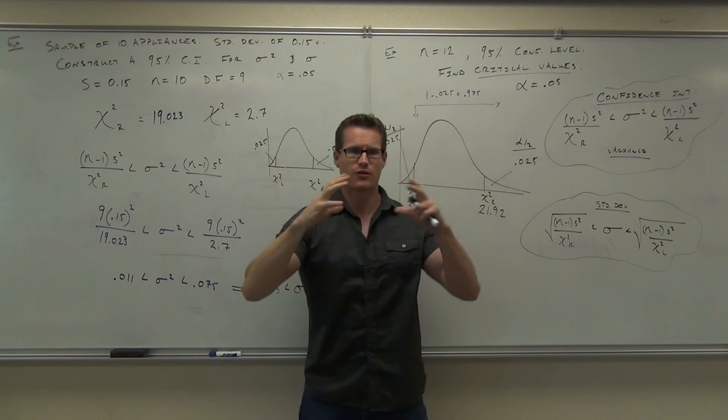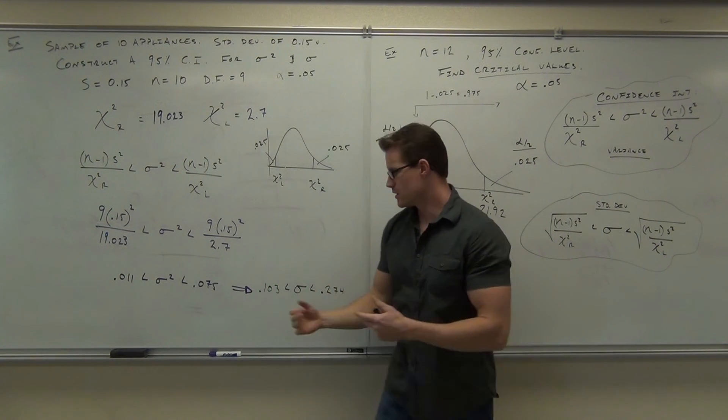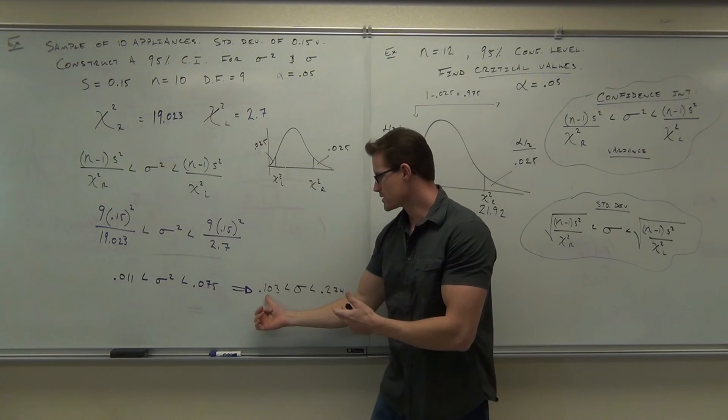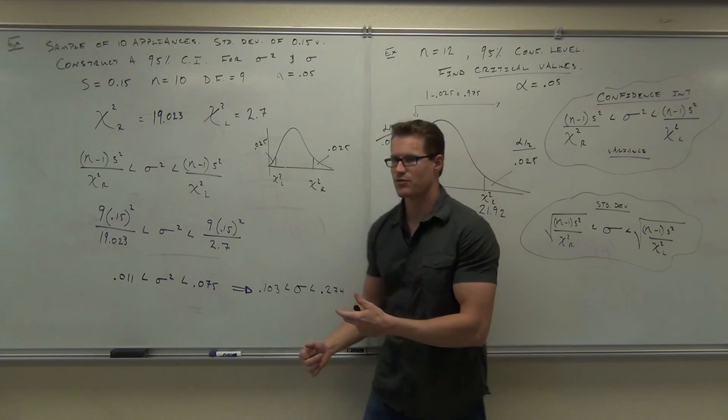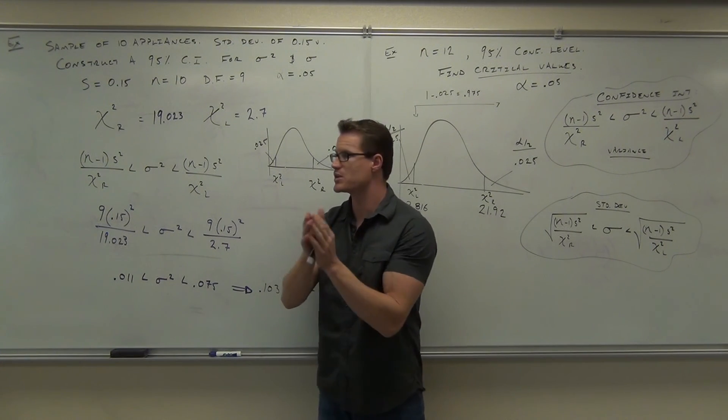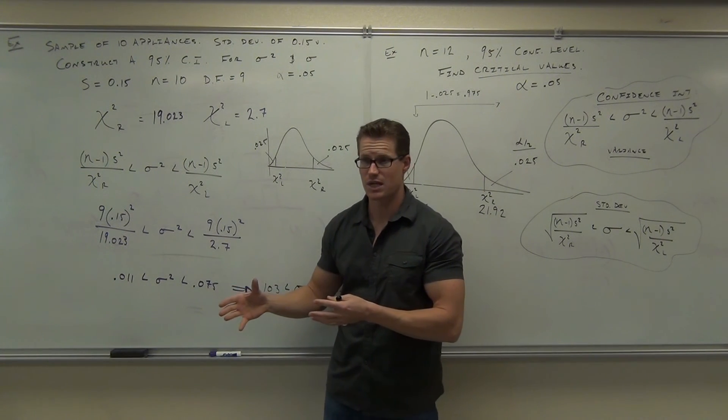In general, for all of our appliances, we are 95% sure that the range in voltage will be either 0.103 to 0.274. That's the most it could range. We're 95% sure that's how much it will range from appliance to appliance. Are you with me on what this interpretation is? That's kind of an important thing to know.